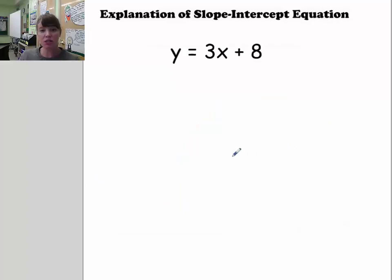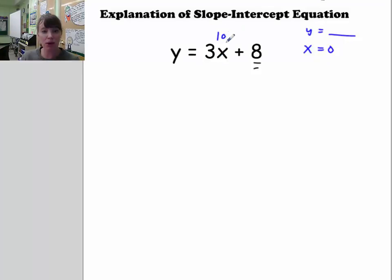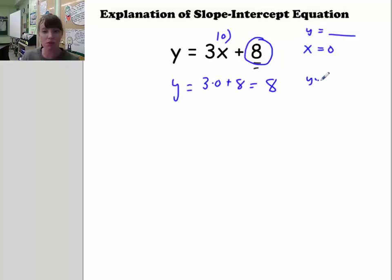The reason why this constant is the y-intercept is because the y-intercept is the value when x is equal to 0 — it's the y-value when x equals 0. So in this equation, if you put 0 in for x, you'd have y equals 3 times 0 plus 8, or just 8. That's why the constant ends up being the y-intercept.